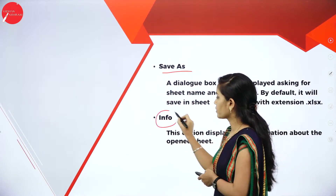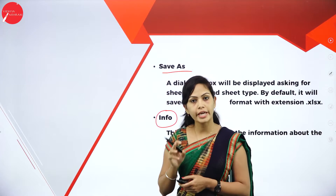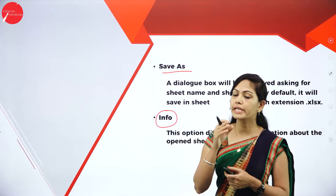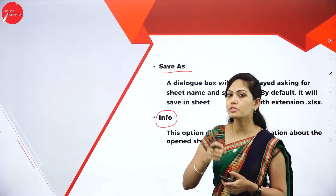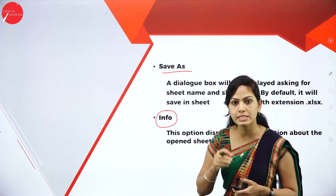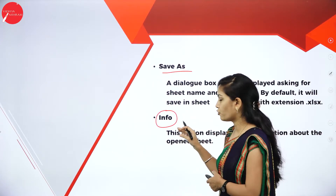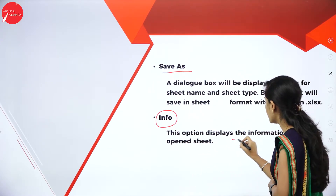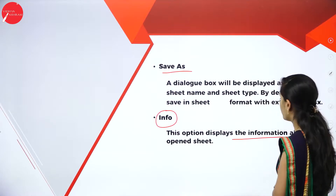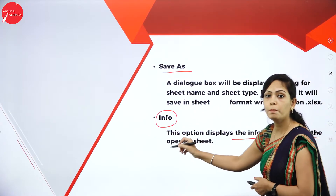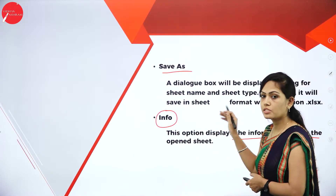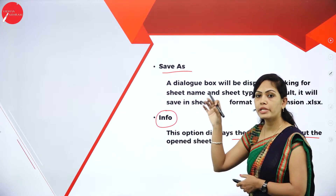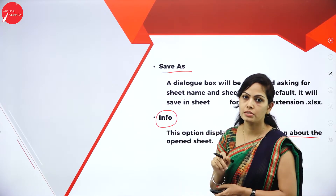And Info. You need to select the File tab. In that File tab, you will get many options called New, Open, Save, Save As, and also Information. This Info option displays the information about the opened sheet.